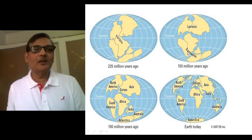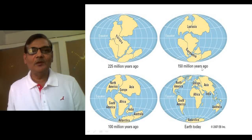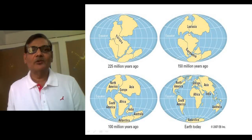Because of continental shift, these continents moved away from each other due to earthquakes and several natural changes which take place regularly. Because of that, 150 million years ago, these continents started moving in such a way that a substantial gap could be seen between the Northern and Southern portions.